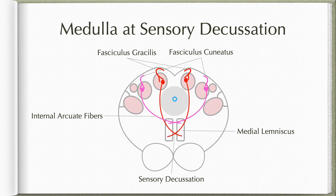Regarding the position of the fibers — as discussed in the video on the dorsal column pathway — the sacral fibers, which are the medial most in fasciculus gracilis and nucleus gracilis, after crossing occupy the anterior most position in the medial lemniscus. The cervical fibers, which are the lateral most in fasciculus cuneatus and nucleus cuneatus, after crossing occupy the posterior most position in the medial lemniscus — that is the typical namaste position as discussed earlier.